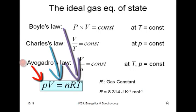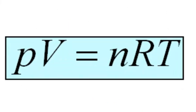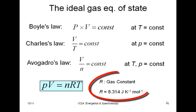By combining all of these, you'll end up with the pressure times the volume is equal to the number of moles multiplied by a constant and multiplied by temperature. The constant's called the gas constant.